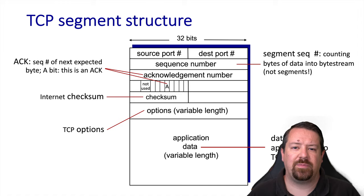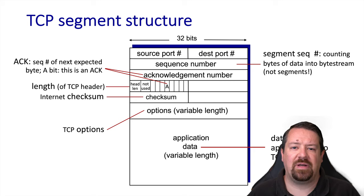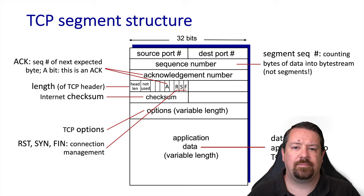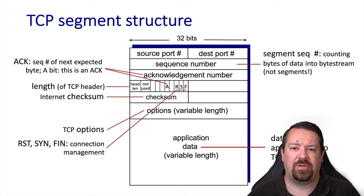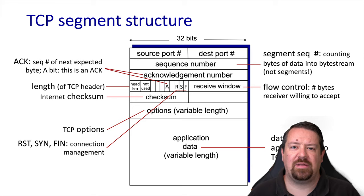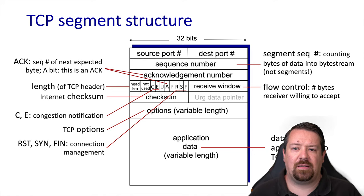TCP also supports a number of optional features, many of which are defined in different RFCs, and we'll describe some of them later on. Because the options can be of varying lengths, the overall TCP header length may vary, and so the header length is specified in a field. To support connection management, we have the reset, FIN, and SYN flags. To handle flow control, we have the receive window — not to be confused with the congestion window we talked about in selective repeat and go-back-N. We also have flags specific to congestion notification, and the last couple of bits for urgent and push, which are not used in practice.